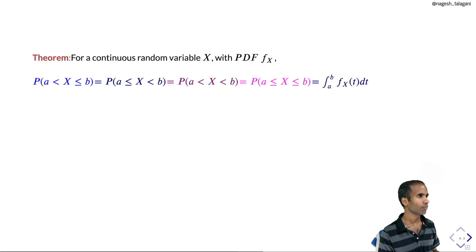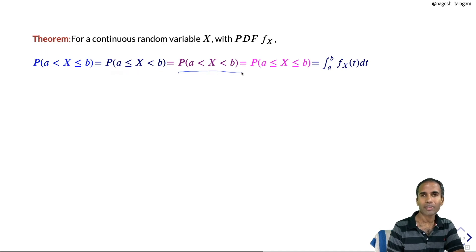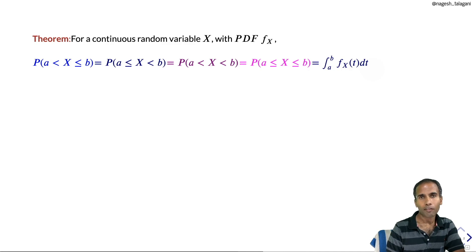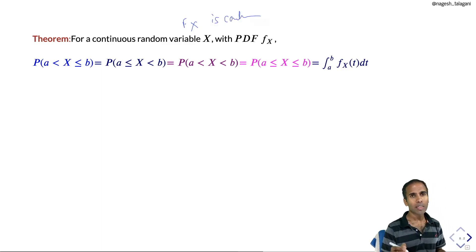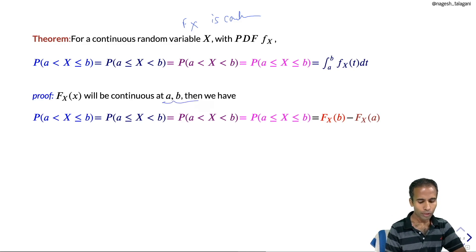Theorem: For a continuous random variable X with PDF f, the probabilities P(a < X ≤ b), P(a ≤ X < b), P(a < X < b), and P(a ≤ X ≤ b) are all equal to ∫_a^b f(t) dt. Since the CDF is continuous at a and b, all these probabilities equal F(b) − F(a). Substituting F(x) = ∫_{−∞}^x f(t) dt and cancelling the common integral from −∞ to a, we get ∫_a^b f(t) dt.